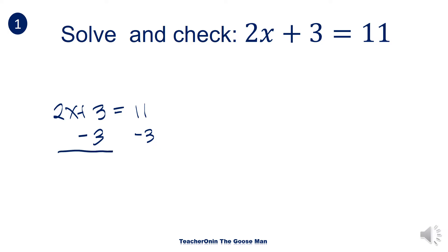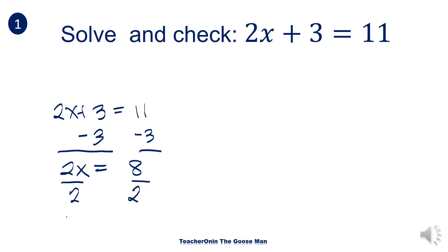So I have 2x is equal to 11 minus 3, which equals 8. Then, using the MPE or multiplication property of equality, I'll divide both sides of the equation by 2. So x is now equal to 4.